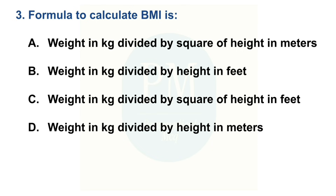Formula to calculate BMI is: Option A: Weight in kg divided by square of height in meters. Option B: Weight in kg divided by height in feet. Option C: Weight in kg divided by square of height in feet. Option D: Weight in kg divided by height in meters. The correct option is Option A — Weight in kg divided by square of height in meters.